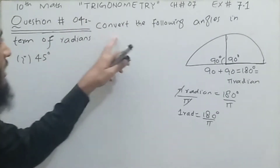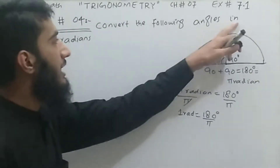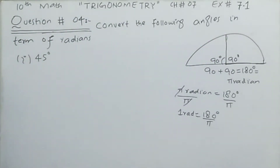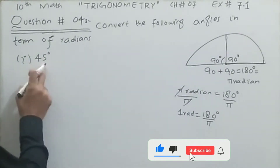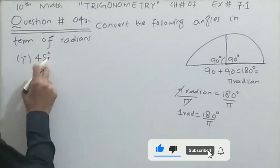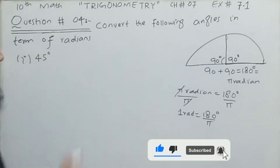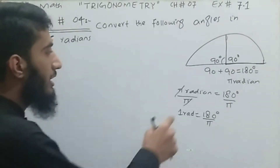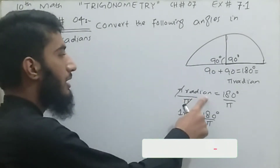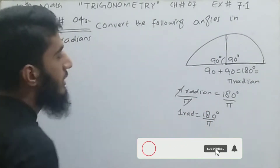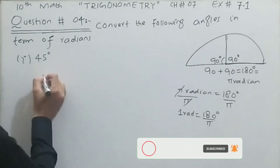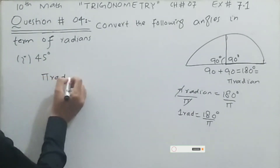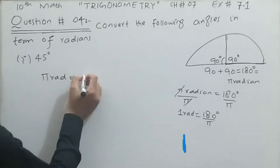The question tells us to convert the following angles in terms of radians. There are four parts in question number four. The first part is to convert 45 degrees into radians. We will use the relation we learned in the previous video: π radian is equal to 180 degrees.